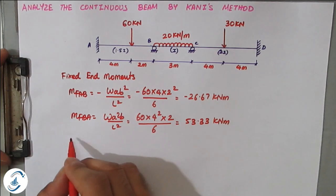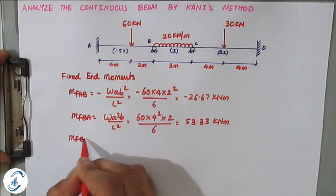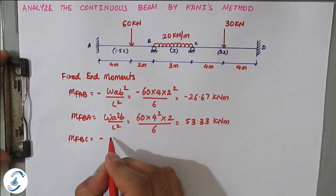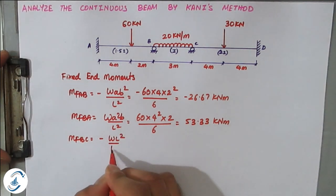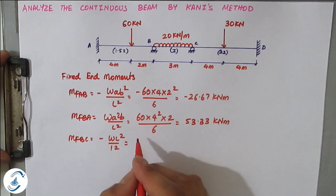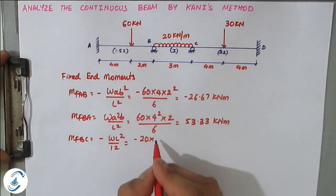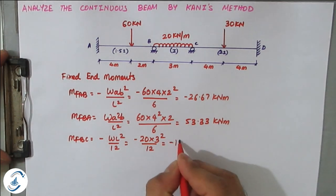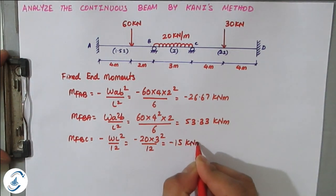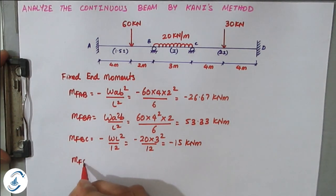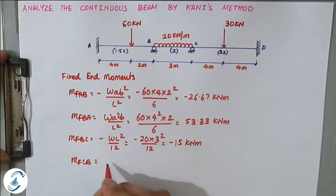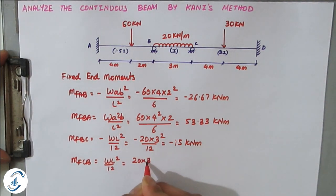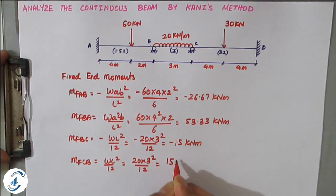For span BC there is a UDL, so MF_BC is anti-clockwise: minus W·L²/12. With W = 20 kN/m and L = 3m, this gives minus 20 × 3² / 12 = minus 15 kN·m. Similarly MF_CB is clockwise and positive: W·L²/12 = 20 × 3² / 12 = plus 15 kN·m.